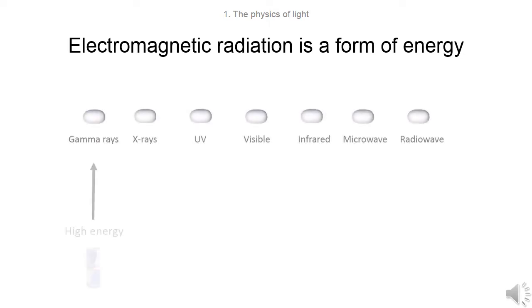Electromagnetic radiation is a form of energy. It can be divided into sections from high energy gamma rays to low energy radio waves.